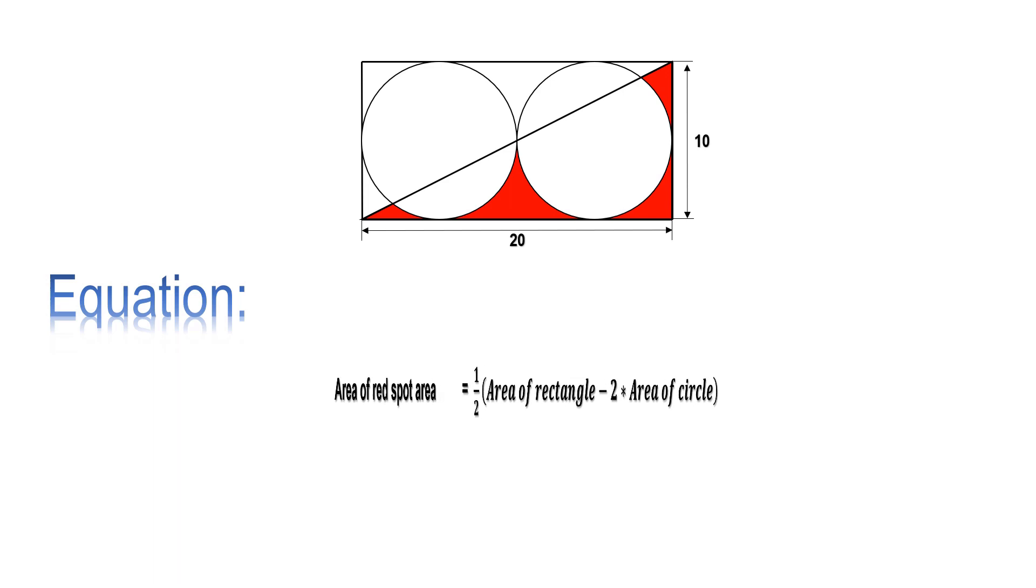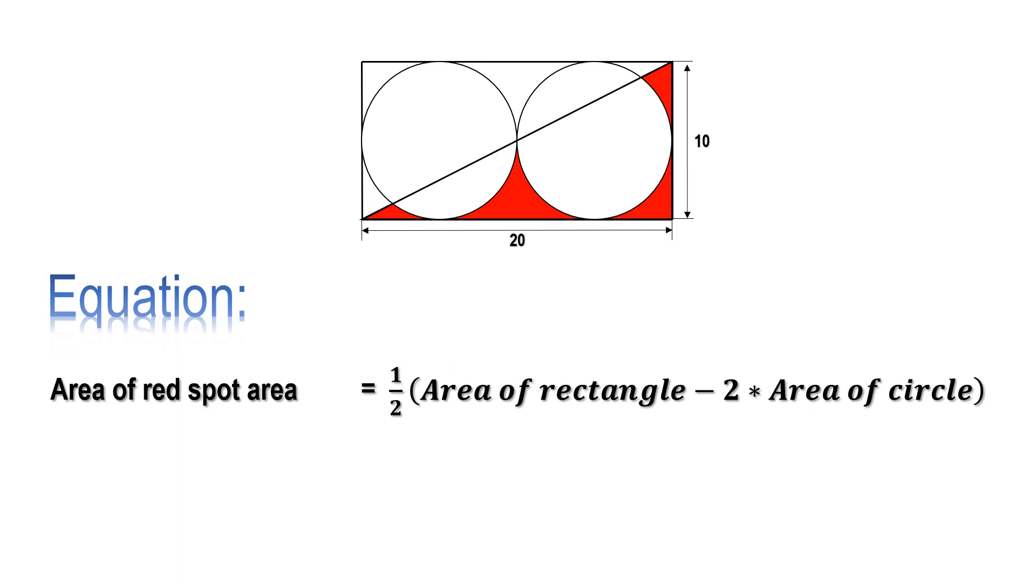Area of red spots equals 1/2 × (Area of rectangle - 2 × Area of circle). We are taking the area of the rectangle, from the area we are subtracting the area of the circles. We have two circles, so 2 × area of the circles.